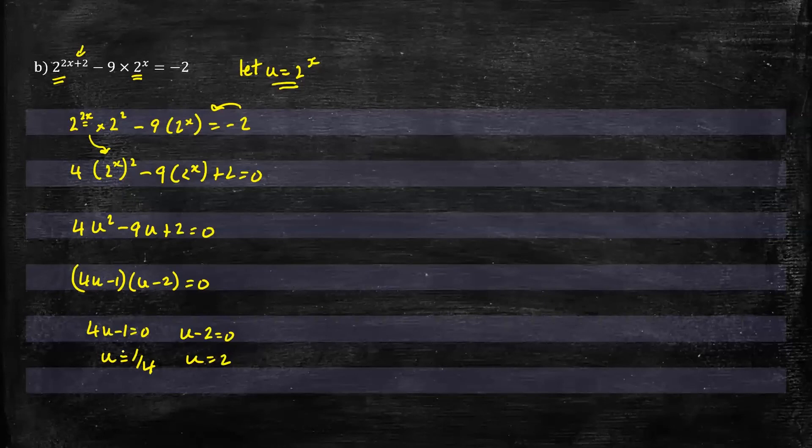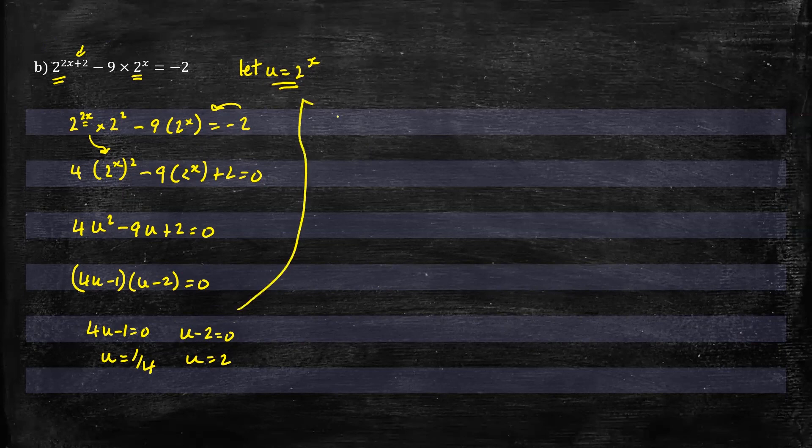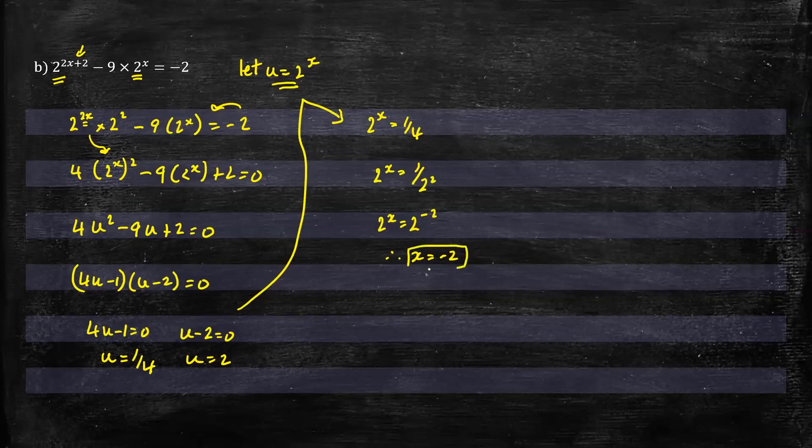So we're not quite finished yet. We have u as 1/4 and u as 2. Let's come back to our original statement here where we said that u equals 2 to the power x. So we can say that 2^x equals 1/4. Let's get that to have the same base, which is 2. 2^x equals 1 over 2 squared, so 2^x equals 2 to the power negative 2. Therefore, x will be equal to negative 2 for this part.